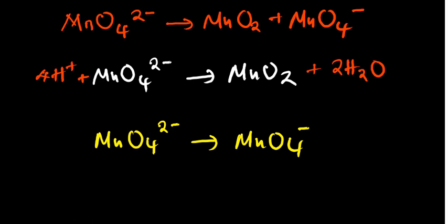We can now go to our second half-reaction. As usual, we balance other atoms other than oxygen and hydrogen first. We have manganese as our only other atom, and it is already balanced. For oxygen, we have 4 on both sides, so that is already balanced. There is no hydrogen, so everything in our second half-reaction is already balanced.